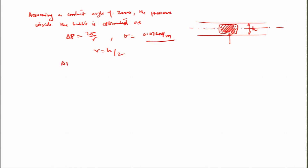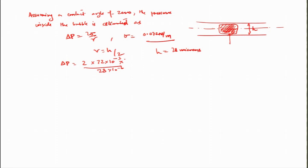In this case, ΔP = 2 × σ / r = 2 × 72×10⁻³ divided by the height of the channel, which equals the diameter of the bubble of 28 microns. So h = 28×10⁻⁶ m for the bubble to occupy the whole channel depth. This is computed as approximately 10⁵ Pascals, or approximately 1 bar, for the bubble to hold.